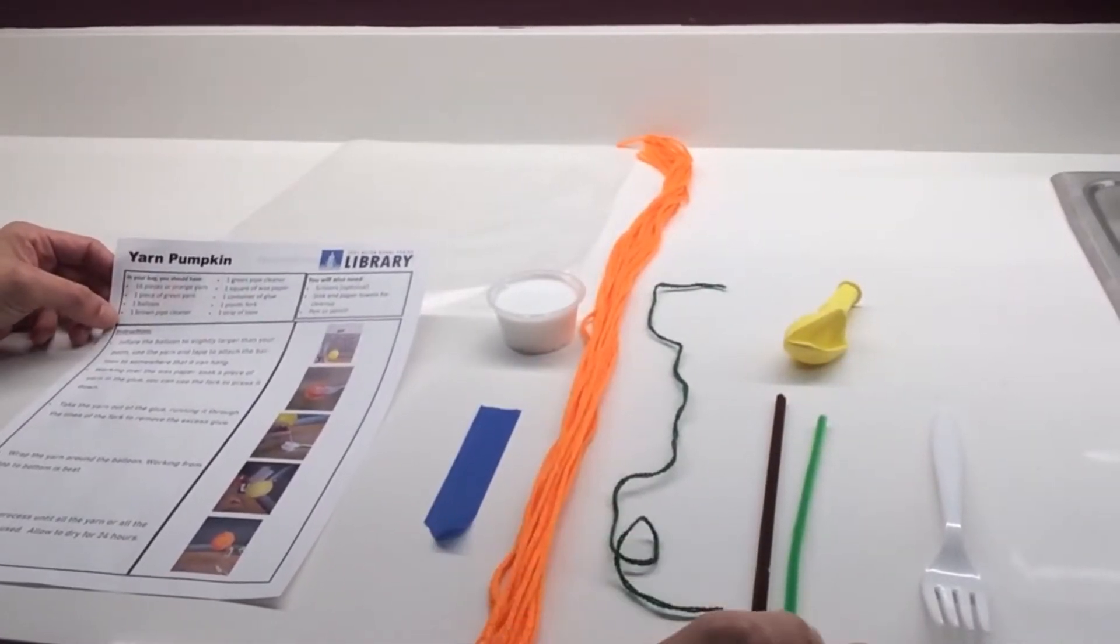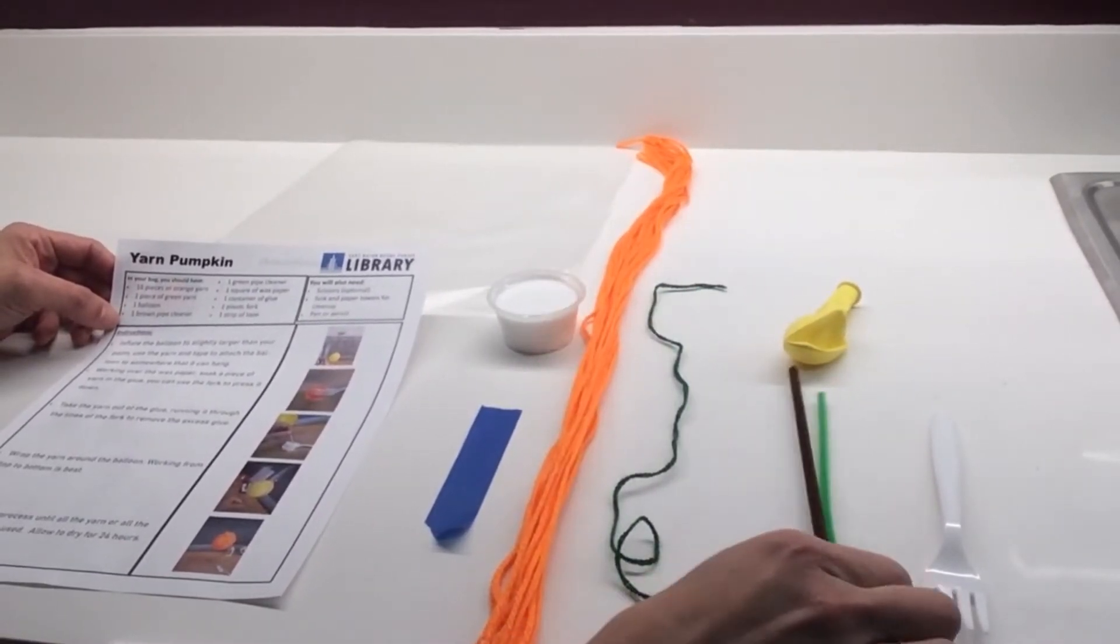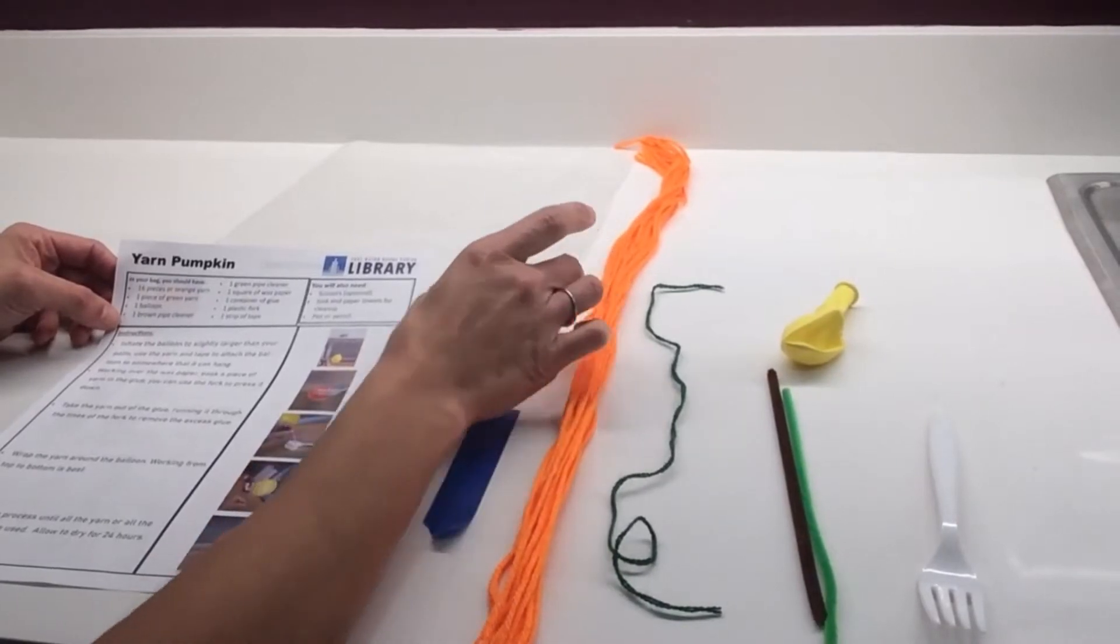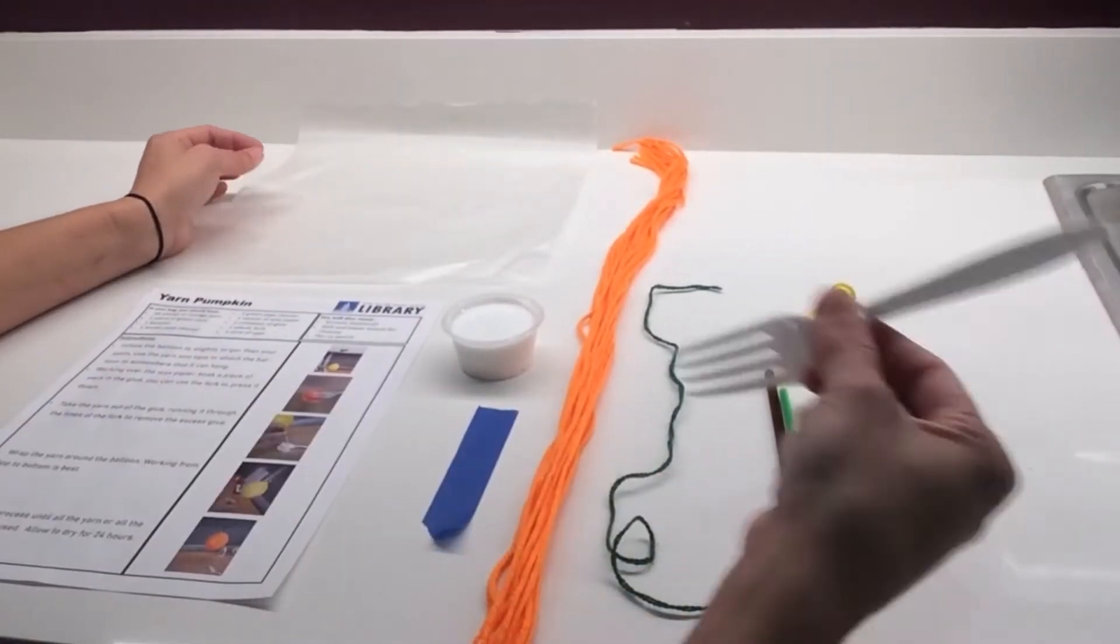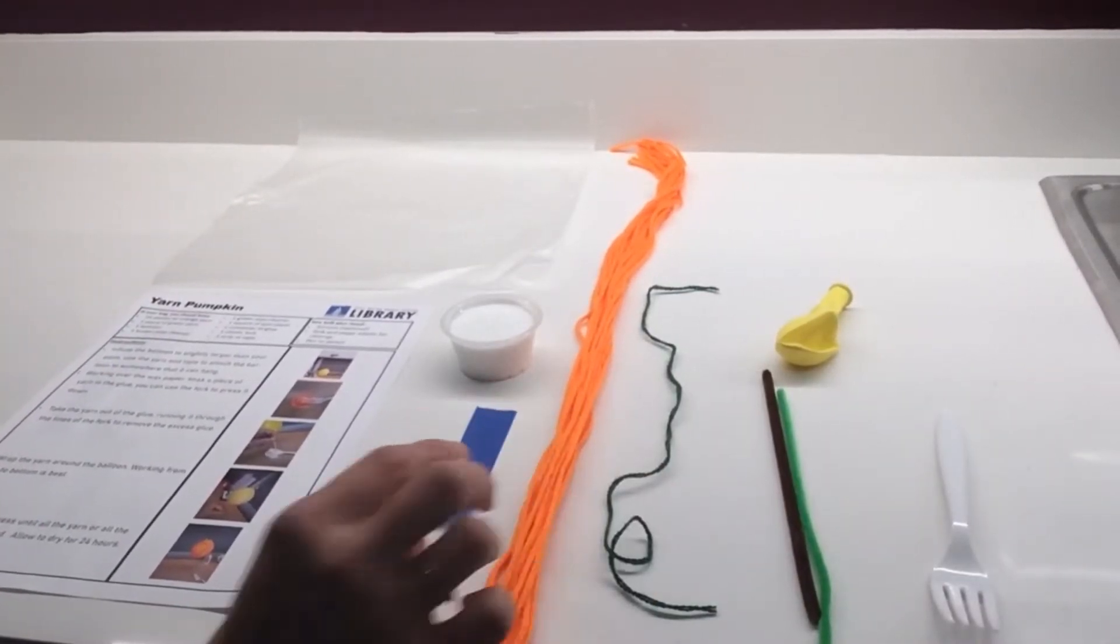You should also have a brown pipe cleaner and a green pipe cleaner, a container of glue, a square of wax paper, a plastic fork, and one strip of tape.